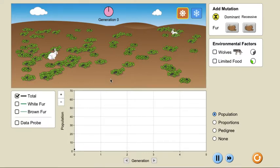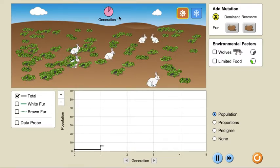We start with add a mate. As they reproduce for a couple of generations, you will see that the population will increase. Over here, we can see the generations.